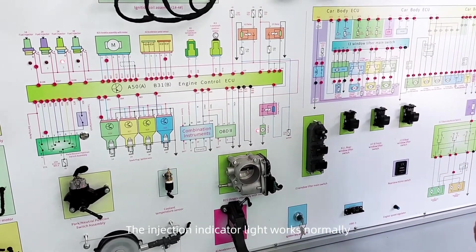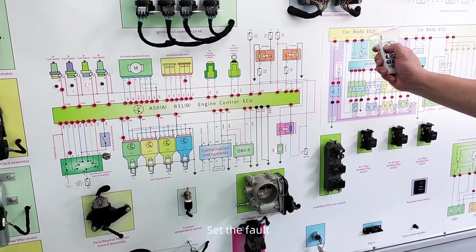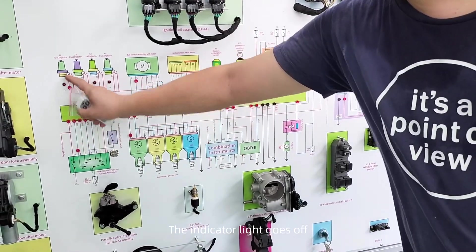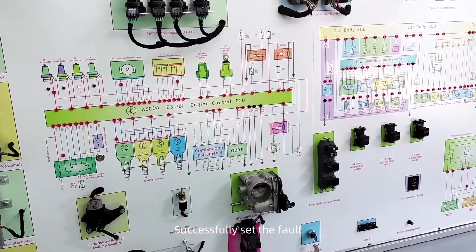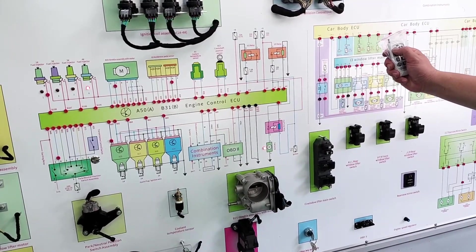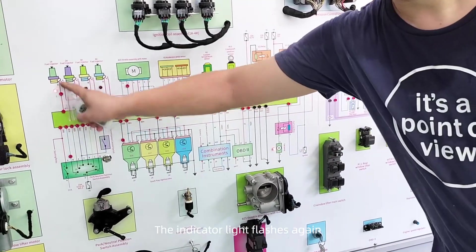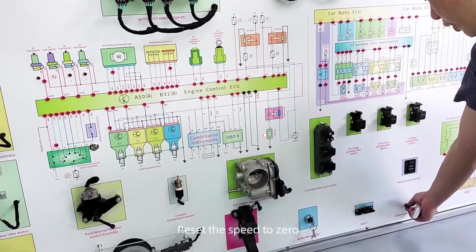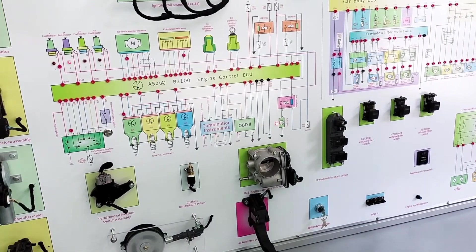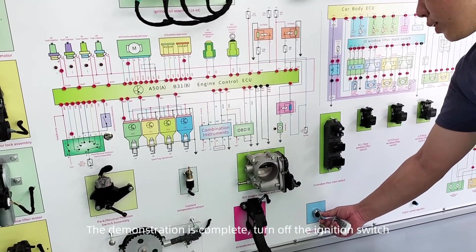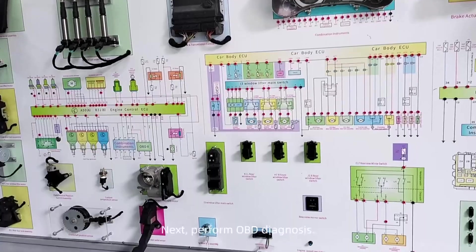The injection indicator light works normally. Set the fault. The indicator light goes off. Successfully set the fault. Restore the fault. The indicator light flashes again. Reset the speed to zero. The demonstration is complete. Turn off the ignition switch.